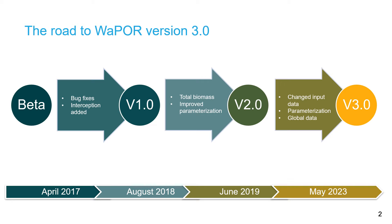The final version of the WAPOR data was launched in 2023. An update was made in the input data to calculate the global WAPOR data. In addition, further parameterizations were made. More details regarding the different versions of the WAPOR data can be found in the course material.